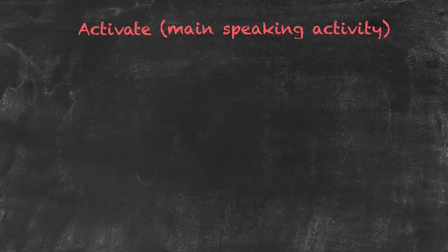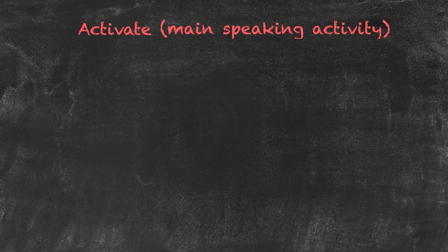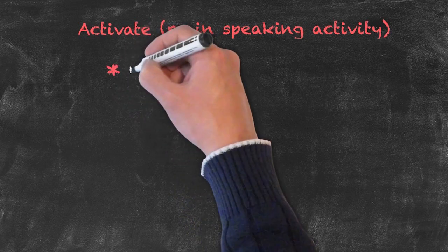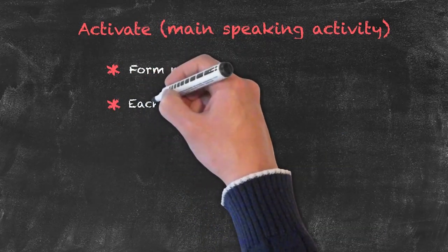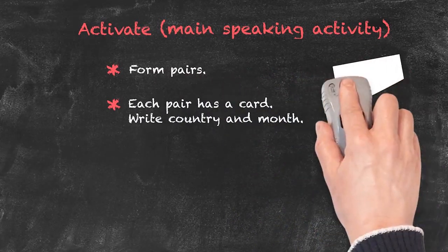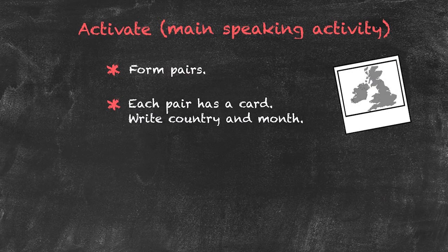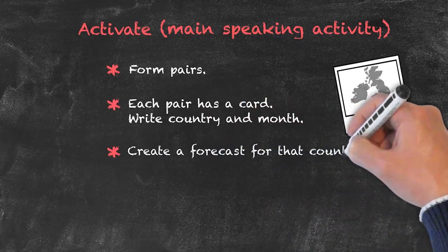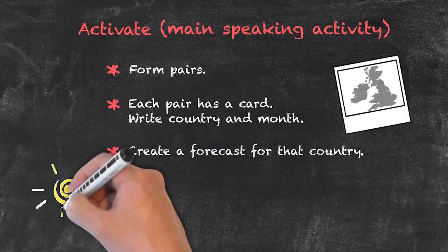The final stage of the lesson will be the activate, which forms the main speaking activity. It's very important here that we do a good demonstration of what we're expecting students to do and elicit the type of target language we expect them to produce. One approach is to first form pairs. Each pair is given a card on which they write a country and a month. The teacher can then collect all the cards, shuffle them, and redistribute them so that pairs receive a card that doesn't have their country or month on it. They are then asked to create a weather forecast for that country in that particular month.